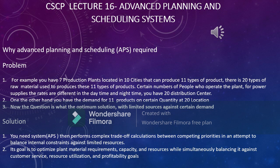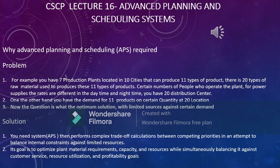Why do we need APS — Advanced Planning and Scheduling software? There is a complexity that this software solves. For example, you have seven production plants located in ten cities that produce eleven types of products. There are twenty types of raw materials used, a certain number of laborers and engineers, and power supply that has different rates in daytime versus nighttime. The question is: what is the optimum solution with limited resources against a certain demand?